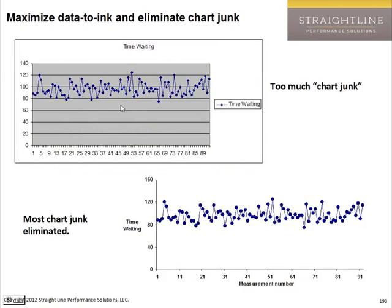Here's a good example of one that maximizes data-ink and eliminates chart junk. This happens to be a time series. In the before version, we've got a legend, a title — simply not needed — lots of tick marks, gray color, and very heavy lines. Here's what it looks like on the bottom with all that eliminated. Much easier to see any patterns. We could add a trend line now and it would make some sense. We've also eliminated many tick marks on the scale. If we made this chart pretty small, you could still basically get what was going on.